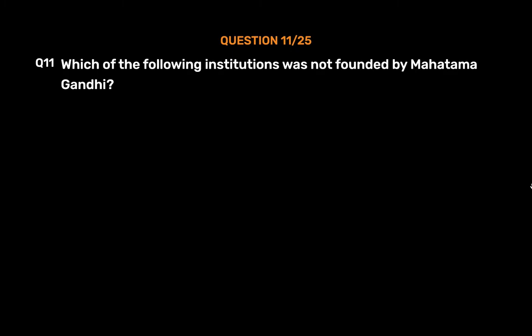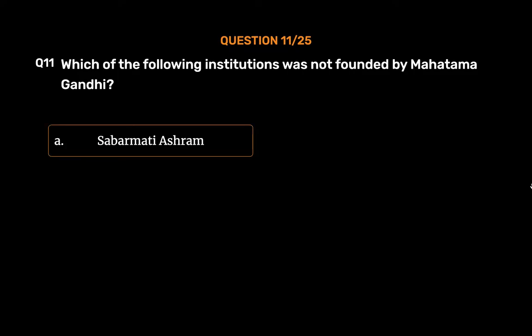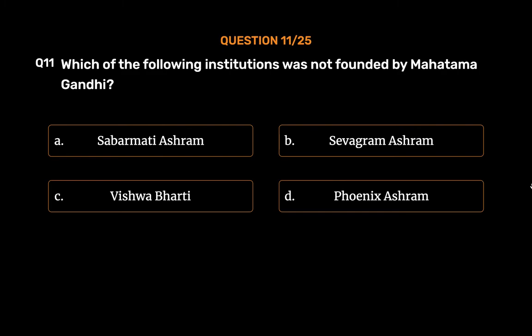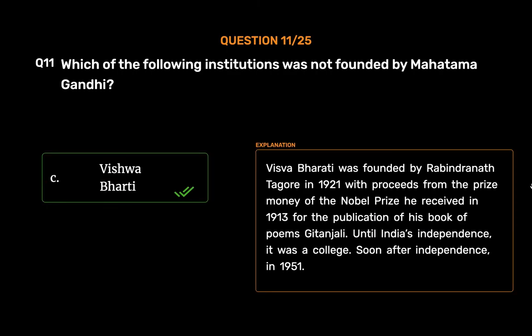Question No. 11. Which of the following institutions was not founded by Mahatma Gandhi? Option A: Sabarmati Ashram. Option B: Sevagram Ashram. Option C: Vishwabharti. Option D: Phoenix Ashram. The correct answer is Option C: Vishwabharti. Vishwabharti was founded by Rabindranath Tagore in 1921 with proceeds from the prize money of the Nobel Prize he received in 1913 for the publication of his book of poems Gitanjali. Until India's independence, it was a college; soon after independence, in 1951, it became a university.